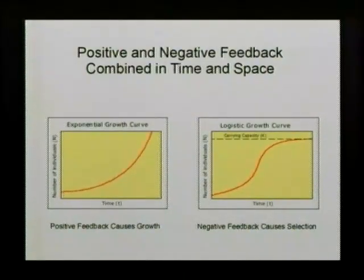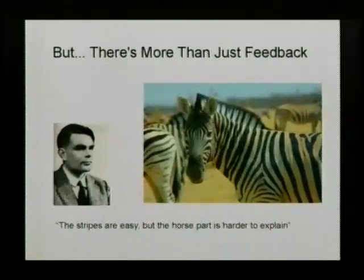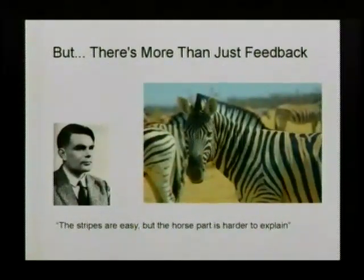But it's not enough to get multicellular organisms. As Alan Turing himself once said, regarding a zebra, the stripes are easy but the horse part is a bit harder to explain.